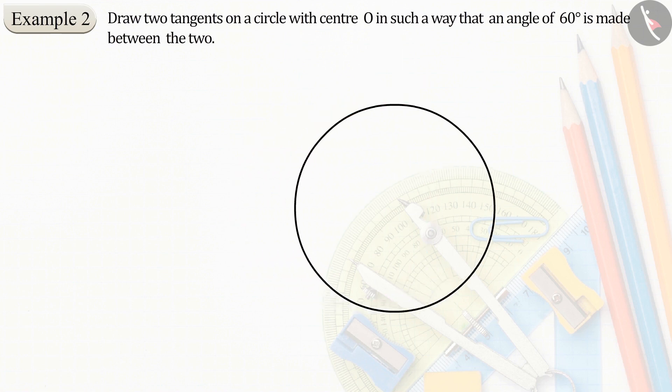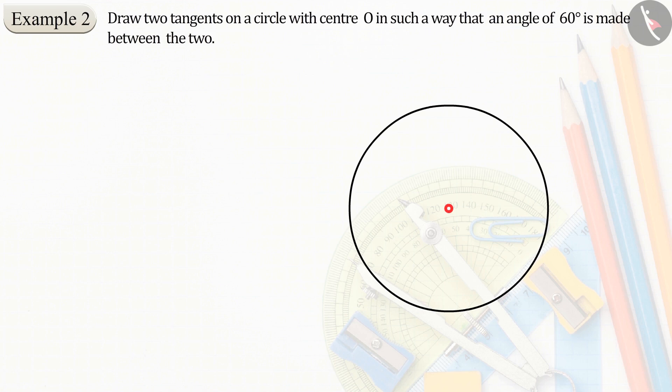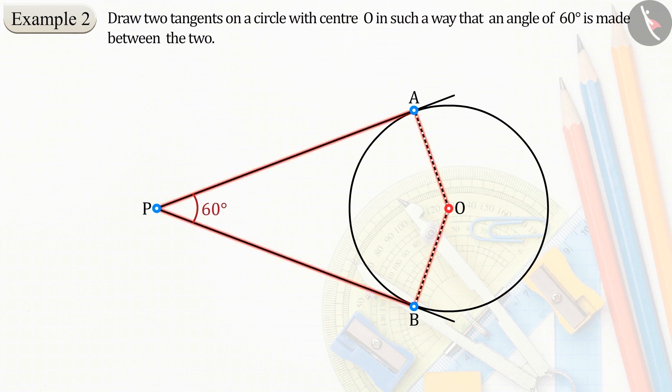In which a circle, whose center is O, which has two tangents, let them be PA and PB, between whom an angle of 60 degrees is formed. Now we can take these points A and B and connect them to center O, which gives us the quadrilateral PAOB, in which the angle APB is 60 degrees, and angles PAO and PBO are right angles.